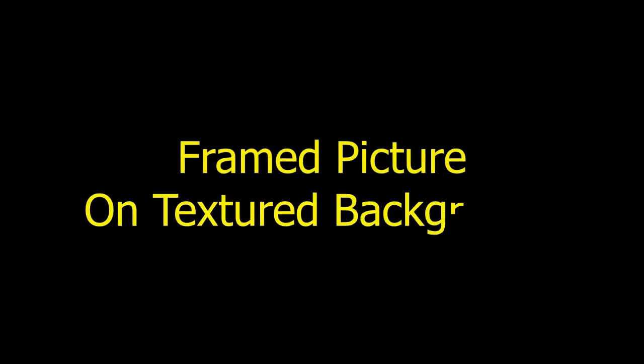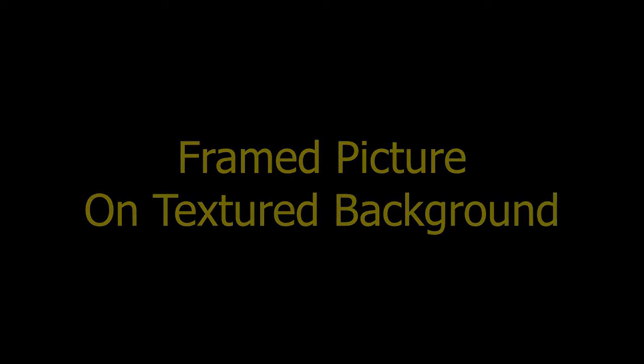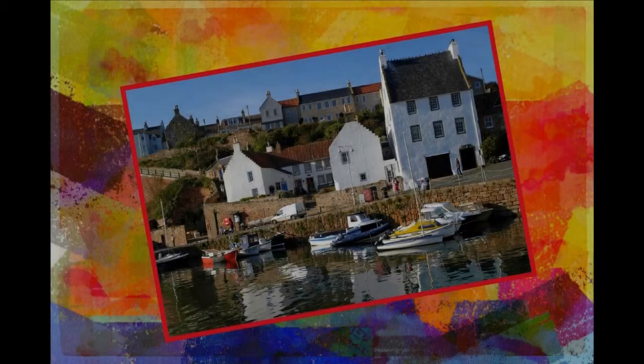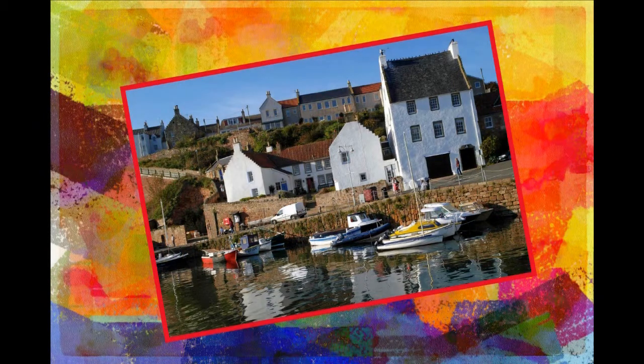Let's see how we create the effect that produces the shown finished result. Basically, there are two stages. In stage 1, we add and scale the texture. In stage 2, we add a colored border to our original image. Then we use the Place and Merge node to place the original image with its border on top of the added texture, as shown in the finished result on screen.